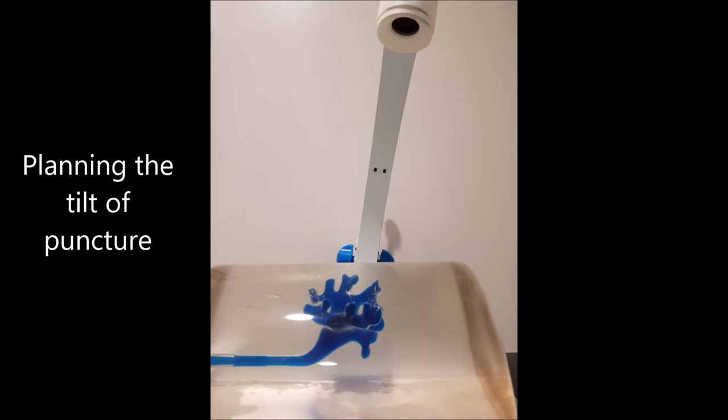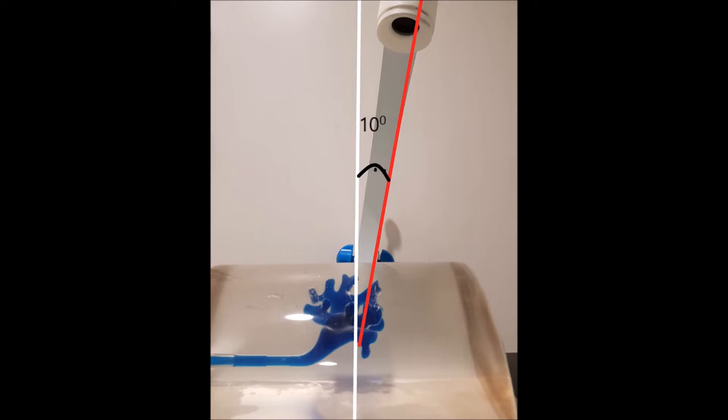The angle at which the target calyx sits from the vertical must be considered in both planes, which corresponds to the rotation of the C-arm as well as tilt of the C-arm.